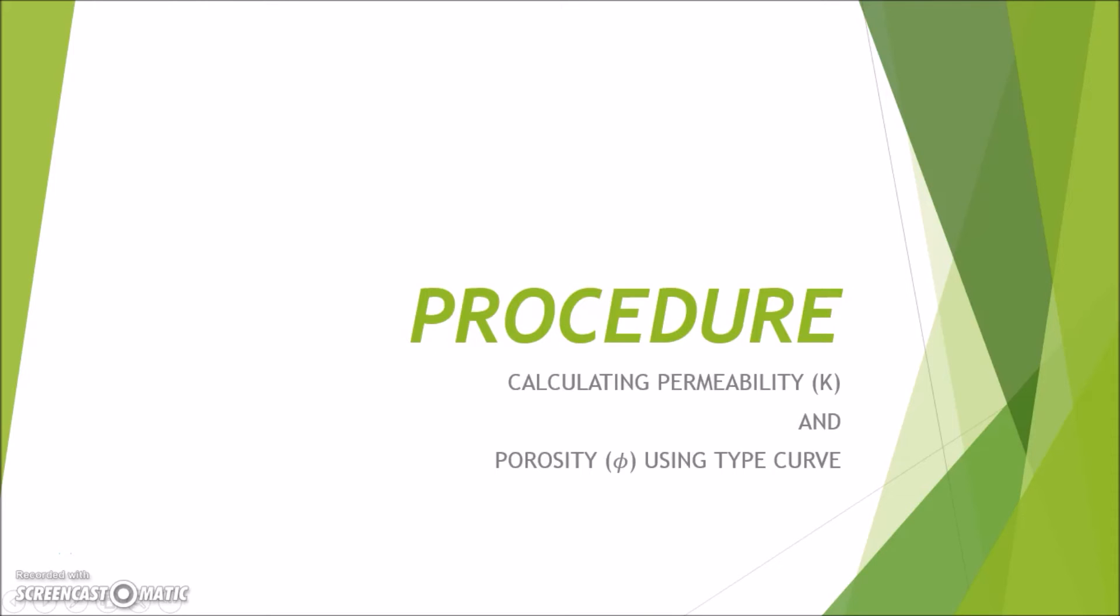Hello, everyone. I'm Fabian, and I'm going to explain about the procedures in calculating permeability and porosity by using the interference test analysis type curve. Basically, there are four steps needed to calculate permeability and porosity using the type curve. Let's take a look at all those four steps. For step one, we need to plot the delta P and time in a log-log graph. Bear in mind that the values of the unit need to follow the field units.